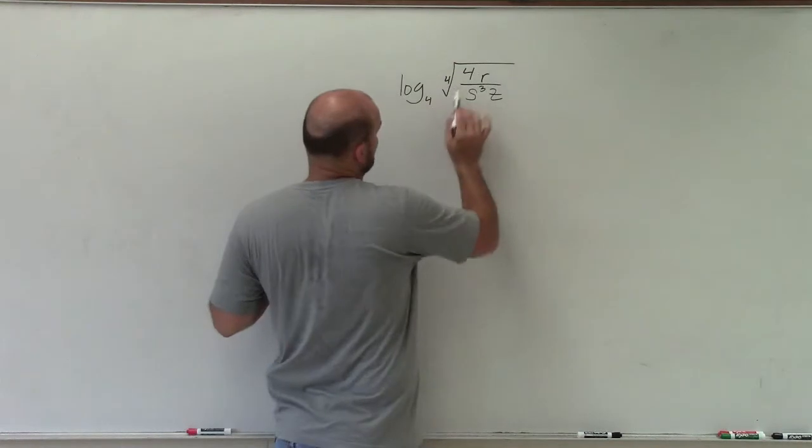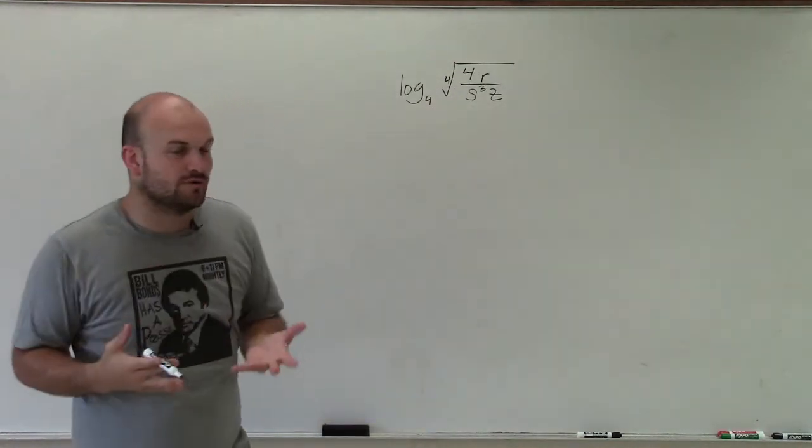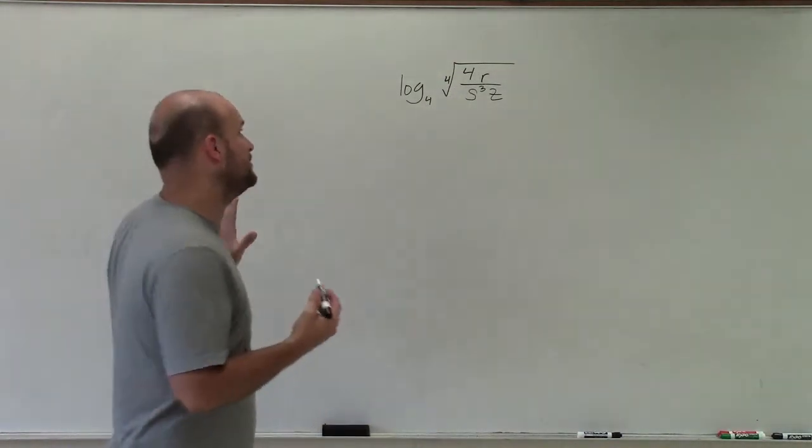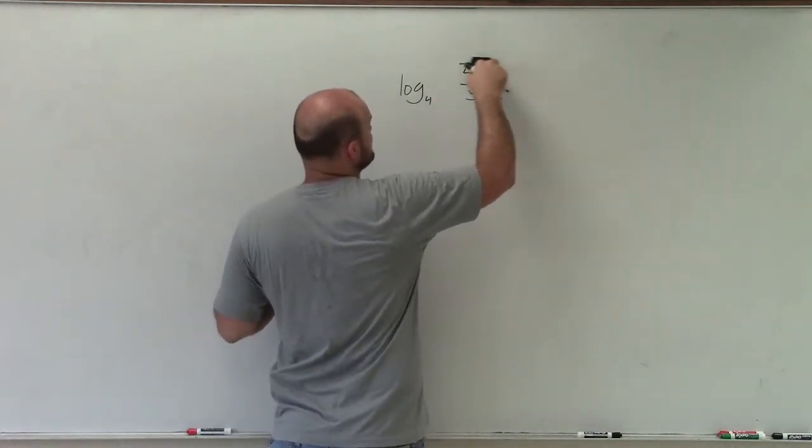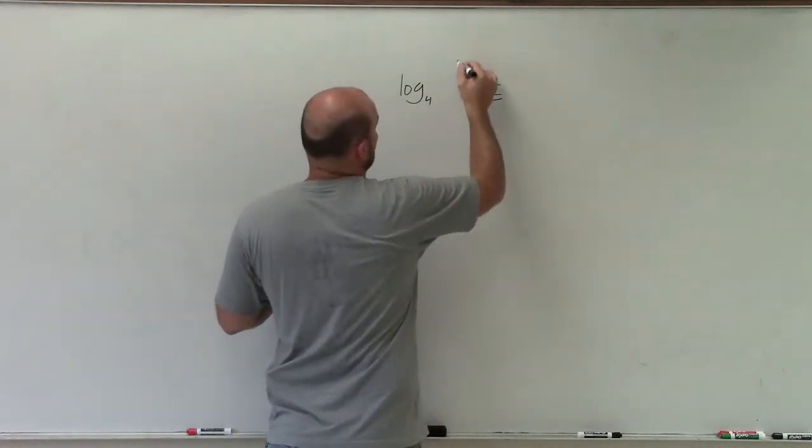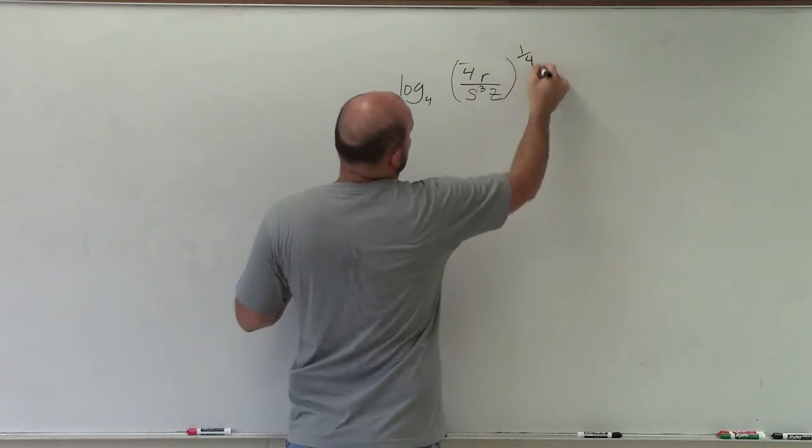So the first thing I notice is square roots. And we don't want to write anything with square roots in our expanded form. So we want to rewrite this in our fractional form. To do that, I can rewrite this. Taking the fourth root of everything, I can rewrite this to the 1 fourth power.